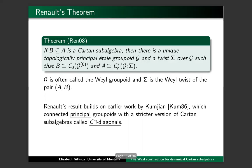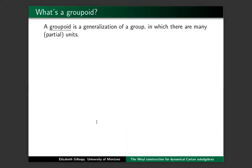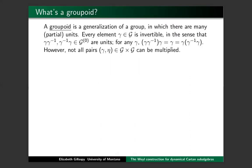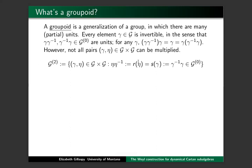So we've got groupoids here. What are groupoids exactly? For purposes of this talk, a groupoid is just a generalization of a group in which you've got many partial units, in the sense that here we've got units γγ⁻¹ and γ⁻¹γ, and those are units in the sense that if I multiply on the left or on the right by these units, I get back the γ that I started with. The difference between a groupoid and a group is that not all pairs can be multiplied. The ones that can — the composable pairs G² — are those where the range of η equals the source of γ.